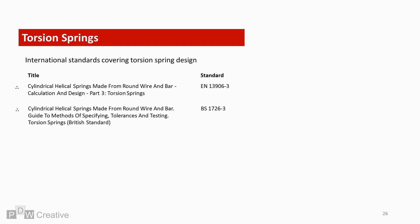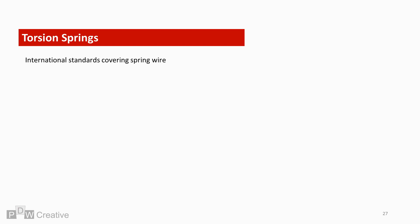A couple of key standards worth considering when looking to design springs include EN 13906 part 3 and BS 1726 part 3. A couple of key standards for the spring material. Just to finish let's quickly look at the spring materials in a bit more detail.